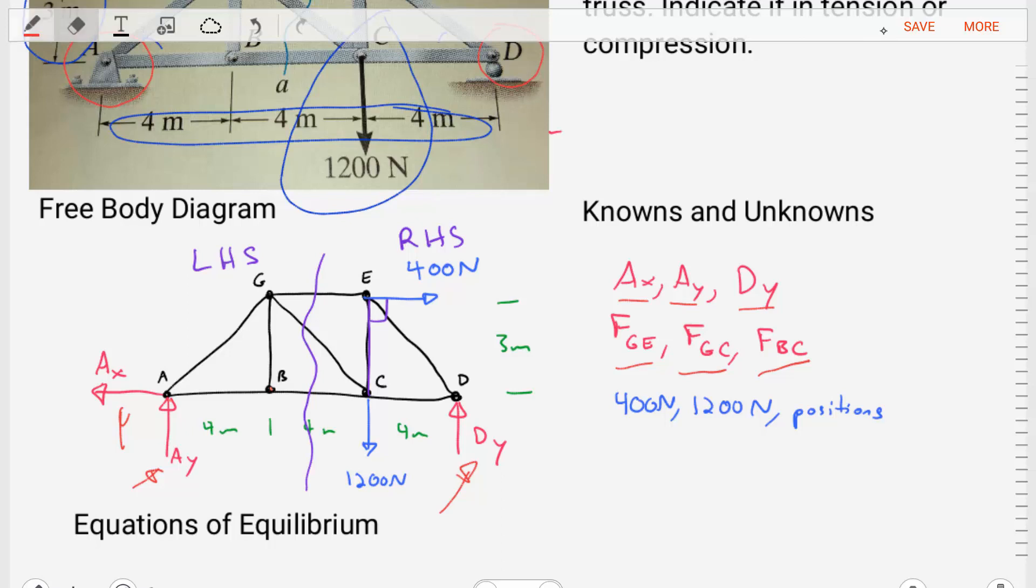Now, if we are looking at our free body diagram, we can highlight that GE is here, GC is here, and BC is here. And so if we were to try to find a path that cuts through all three of those, we could simply draw a line, a squiggly line there. That would be a section line, a place we would probably want to section our structure.